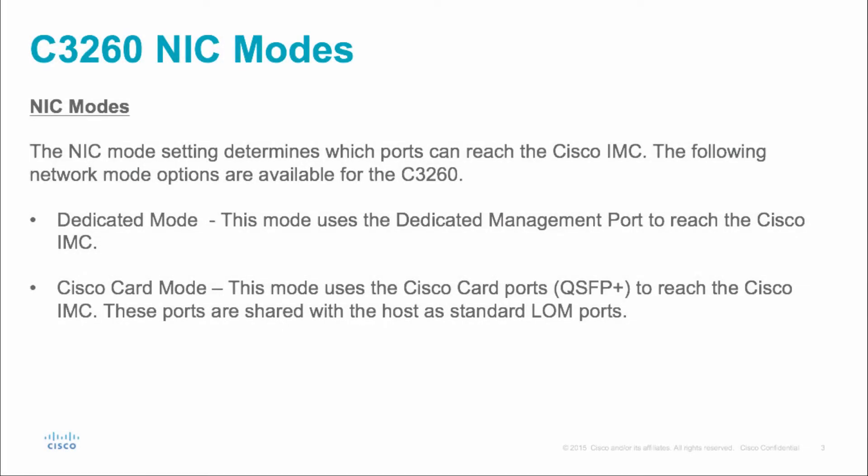Now let's talk about the C3260 NIC modes. The NIC mode setting determines which ports can reach the Cisco IMC, or integrated management controller. The C3260 has two NIC modes. The first mode is dedicated mode, which uses the dedicated management port — the RJ45 port shown on the previous slide — to reach the Cisco IMC. The default setting here is auto negotiation enabled.